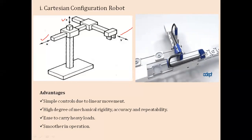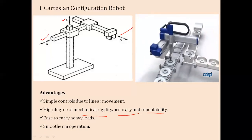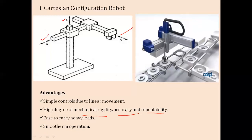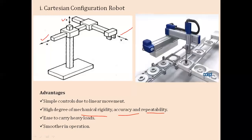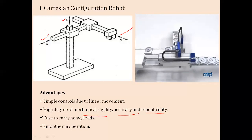The Cartesian configuration has simple controls due to its linear movement. It has a high degree of mechanical rigidity, high accuracy, and can carry out repeated operations. It can carry heavy loads, especially for pick-and-place operations, and it is smoother in operation due to simple linear motion in all three axes. You can see it placing objects from one position to another, with three distinct axes of motion.